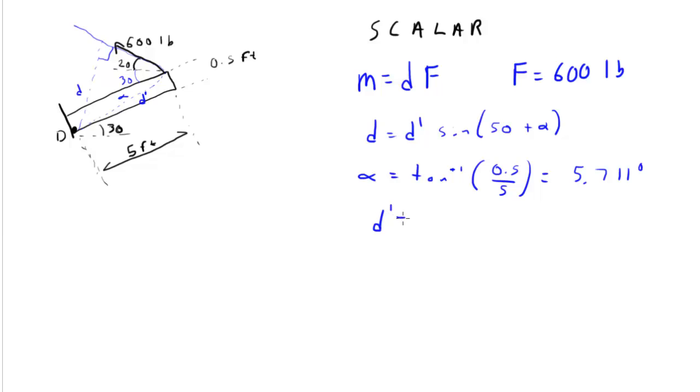Delta, or excuse me, D prime is equal to 5 over the cosine of alpha, right? So this is the hypotenuse. This is the adjacent leg of 5. That equals 5.02 feet.